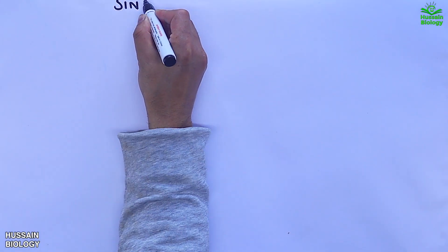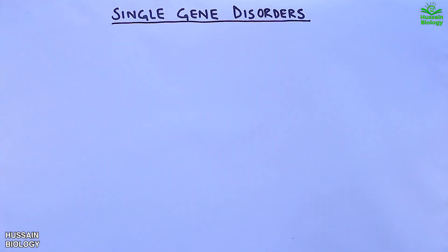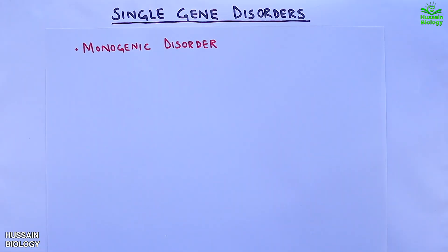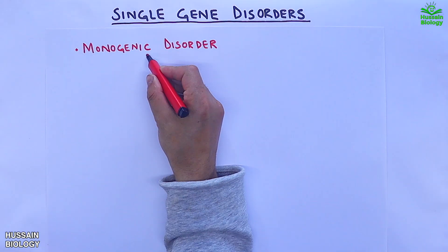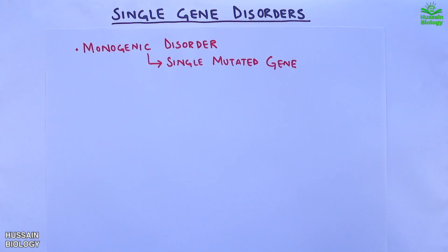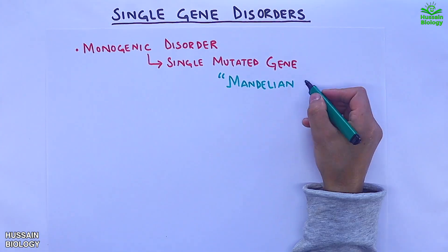In this video we'll be discussing single gene disorders, also known as monogenic disorders, where only a single gene is associated with the disorder or disease. These disorders follow Mendelian inheritance, which is why they are referred to as Mendelian disorders.